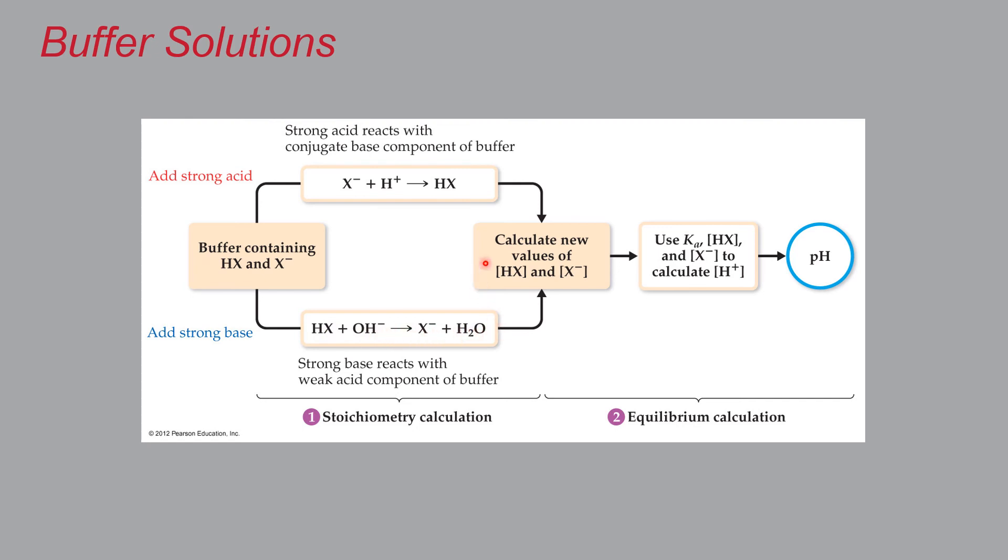And that will give you either one of these will change the amounts and by extension the concentrations of the weak acid and its conjugate base. And then you will use those changed amounts to calculate a new pH based on those amounts, basically using the Henderson-Hasselbalch equation is how this usually works. And this is just stoichiometry from last semester.